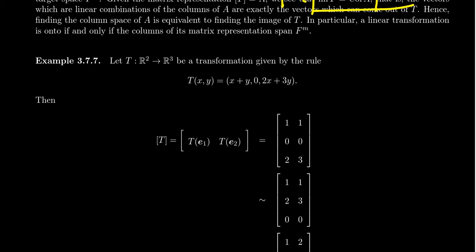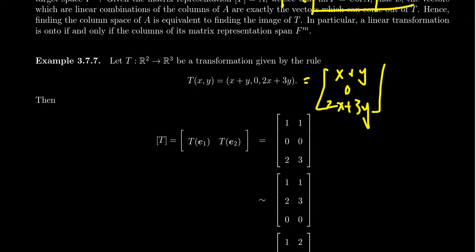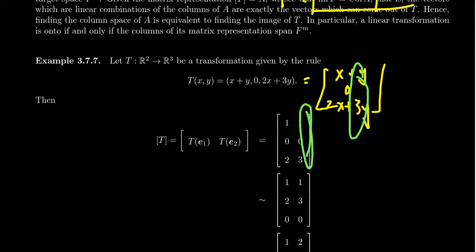Let's take the transformation T which goes from R² to R³, given by the formula T(x,y) = (x+y, 0, 2x+3y). Written as a column vector, this is x+y in the first coordinate, 0 in the second, and 2x+3y in the third. We can quickly read off its matrix representation: the first column is (1, 0, 2) and the second column is (1, 0, 3).